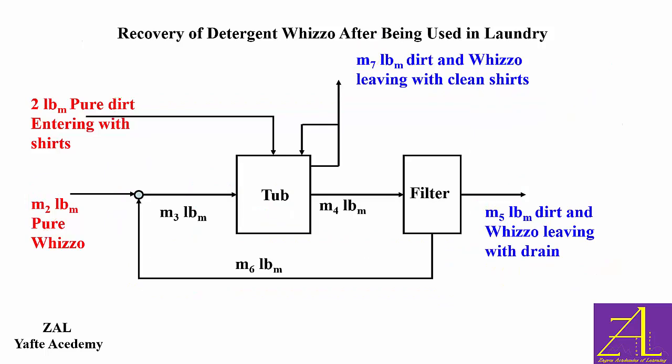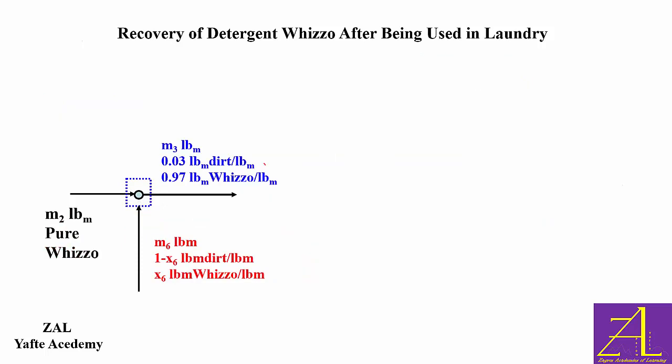The next question involves stream 6, which is the recycle stream coming into the mixing point. If we adopt a system around the mixing point, draw a dotted line, and prepare a sub-flowchart — fully labeled with compositions — we see there are three unknowns: m3, m6, and x6. We can only write two balance equations, so the system has three unknowns and two equations; therefore it is underspecified and cannot be solved at this point.